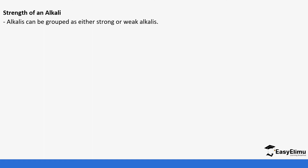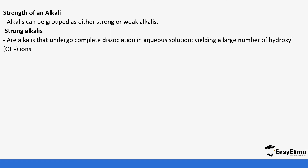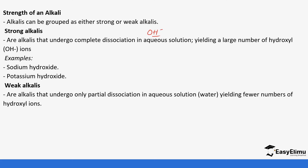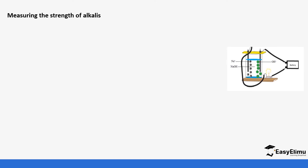Alkalis can be grouped as either strong or weak, just like acids. Strong alkalis undergo complete dissociation in aqueous solution, yielding a large number of hydroxide ions — they dissociate fully, giving the highest concentration of hydroxide ions. Examples are sodium hydroxide and potassium hydroxide. Weak alkalis undergo partial dissociation in aqueous solution, yielding fewer hydroxide ions. Examples are ammonium hydroxide and calcium hydroxide.